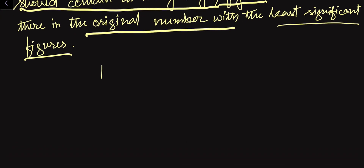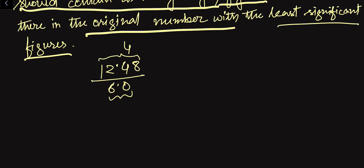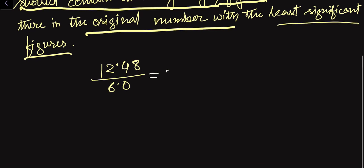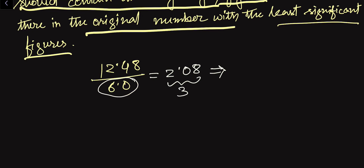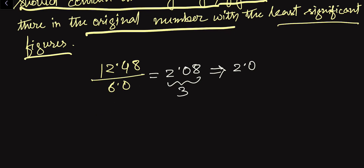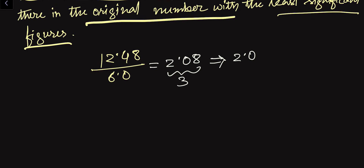Suppose we want to divide 12.48 by 6.0. In the first number we have four significant figures; in the denominator we have two significant figures, so the result should contain only two significant figures. If we divide, the answer is 2.08, but that has three significant figures. Since the denominator has the least number of significant figures, which is 2, we must express the answer as 2.0 — only two significant figures.